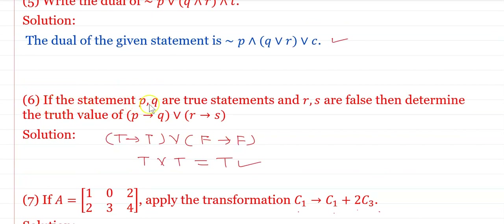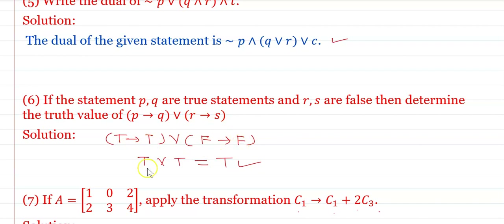If p and q are true statements and r and s are false, determine the truth value of: (p → q) ∨ (r → s). T → T is T; r and s are both F, so F → F is T. Therefore T ∨ T = T. Hence the truth value of the given statement is True.